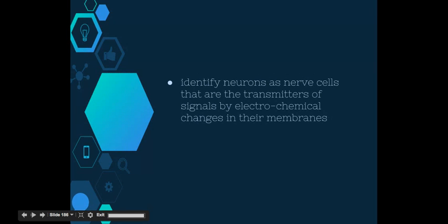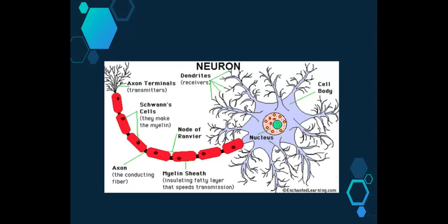So the first dot point we're going to look at is identify neurons as nerve cells that are transmitters of signals by electrochemical changes in their membrane. You'll recall that we had a look last lesson that nerves are made up of bundles of neurons, all of which have similar structures, including the cell body that houses the nucleus and the mitochondria.